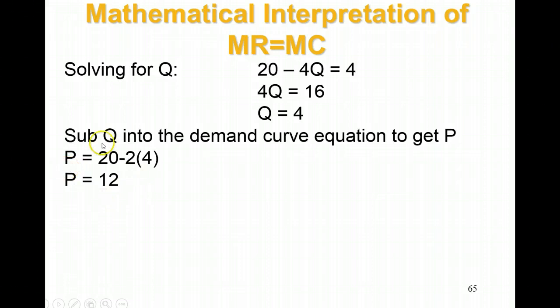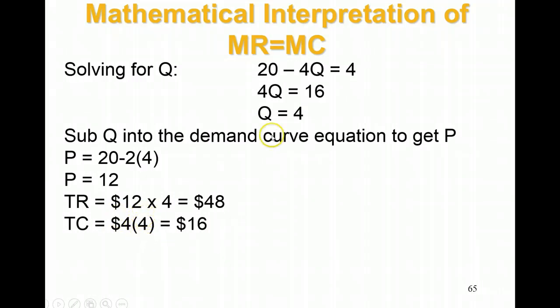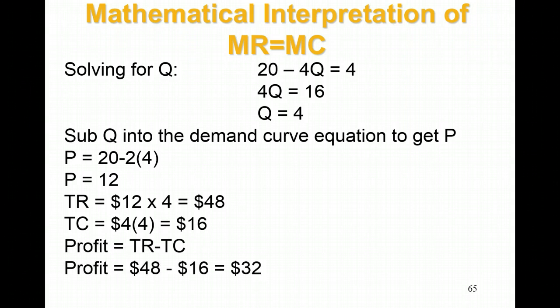Now I've got P and Q, so I can figure out total revenue. Total revenue equals 12 times 4, which is $48. Now I need to figure out total cost. My total cost equation is 4Q. Plugging in 4 units, my total cost is 16. So profit is simply total revenue minus total cost, and there's my profit for a monopoly.